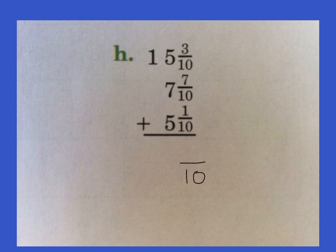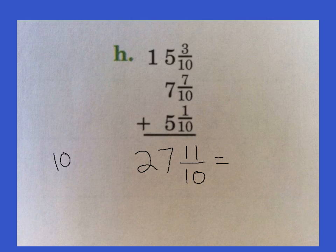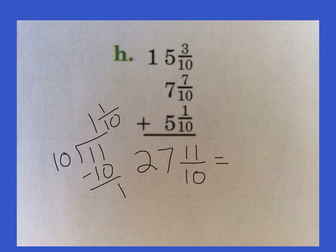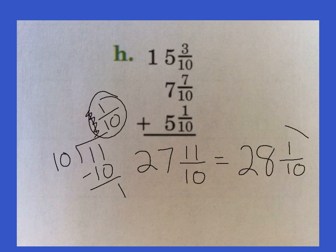Our denominator is 10. Three plus 7 is 10, plus 1 more is 11. Fifteen plus 7 is 12, plus 5 more would be 27. Now I'm going to take that 11 over 10 and do the division. Ten goes into 11 one time, and we have 1 and 1 tenth. We need to add our 1 to 27 — it becomes 28. And we keep our fraction of 1 tenth. Our answer is 28 and 1 tenth.